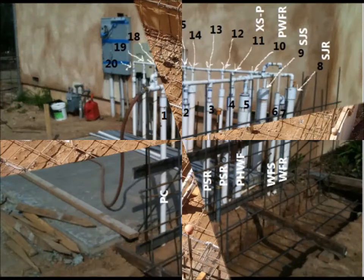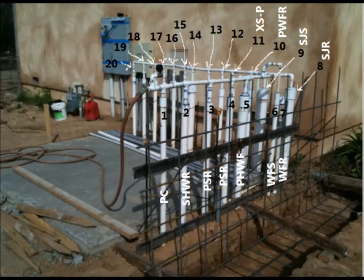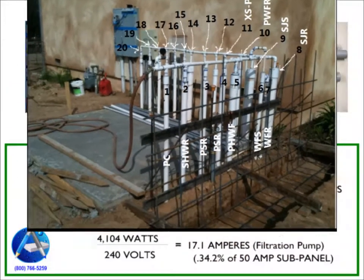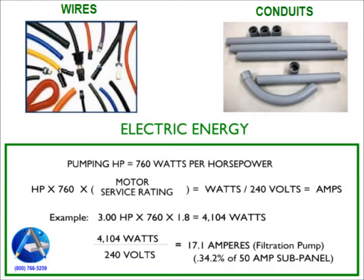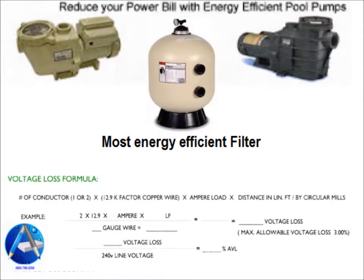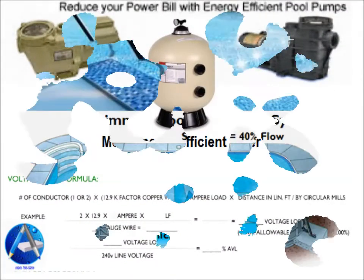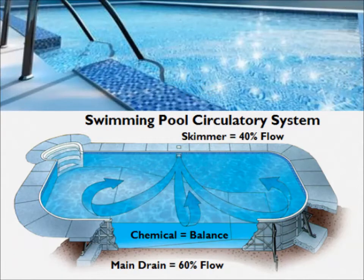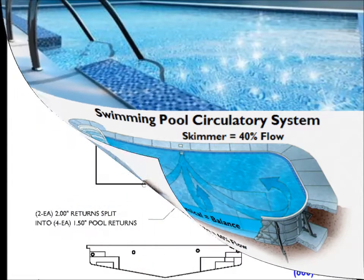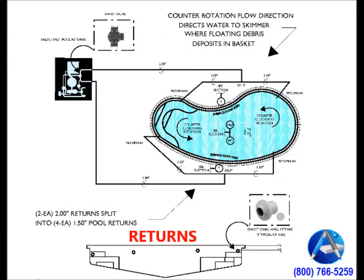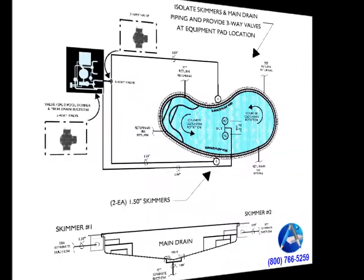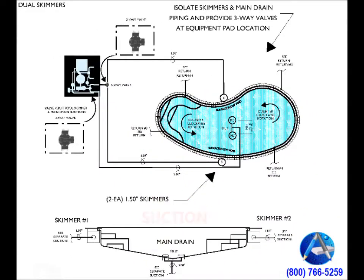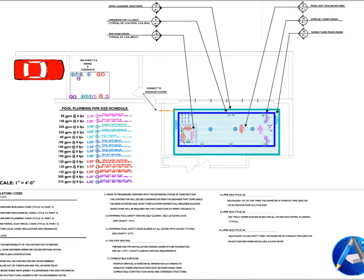Our level of planning calls out the plumbing pipe sizes that meet the Title 24 energy-efficient flow characteristics, as well as calling out the conduit and wire gauges that will meet the National Electric Code allowable voltage losses along a given run's distance. Our plans anticipate and call out what will be necessary in accomplishing a less expensive pool to operate and a grief-free pool in which to maintain.